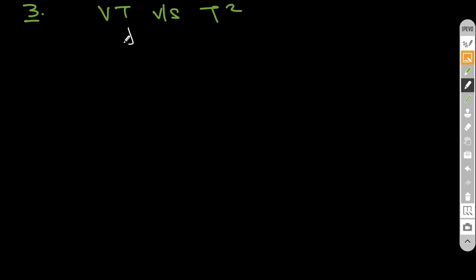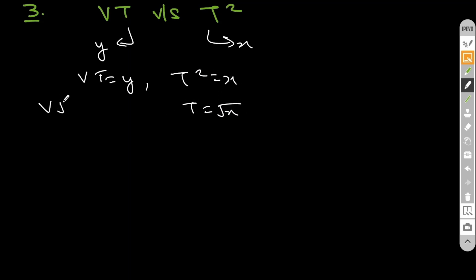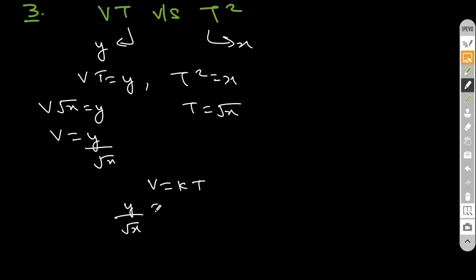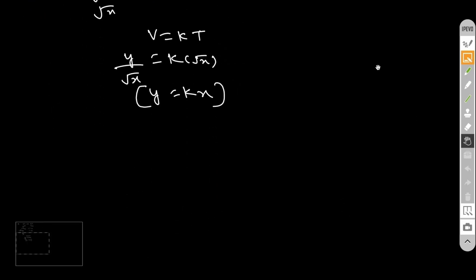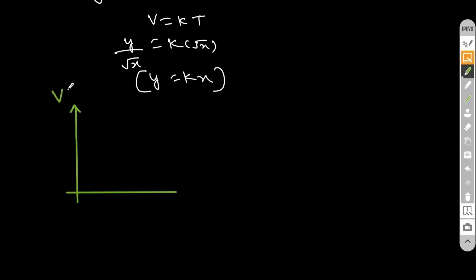The third graph is VT versus T². Here VT is on the Y axis and T² on the X axis. So Y = VT, X = T², which means T = √X. Substituting into V = KT gives Y/√X = K·√X, so Y = KX. This is of the form Y = MX + C where C is zero, meaning it passes through the origin, and slope equals K.